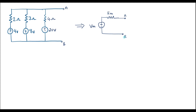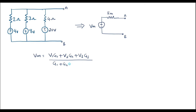This is the A terminal and this is the B terminal — this is the Millman's equivalent circuit. Vm is Millman's voltage and Rm is Millman's resistance. Now we need to calculate Vm and Rm. Vm is calculated using the formula: Vm = (V1·G1 + V2·G2 + V3·G3) / (G1 + G2 + G3), where G1, G2, G3 are reciprocals of R1, R2, R3. Let R1 = 2Ω, so G1 = 1/2; R2 = 3Ω, so G2 = 1/3; R3 = 4Ω, so G3 = 1/4.